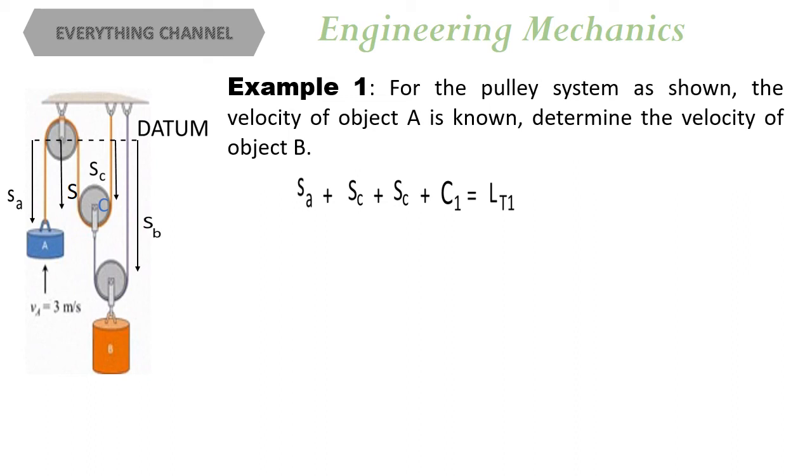First, the total length of rope 1 is constant that equals SA plus SB plus SC plus some constant length equals total length LT1.